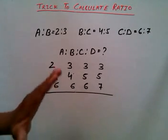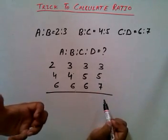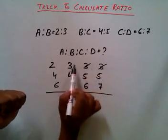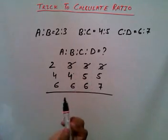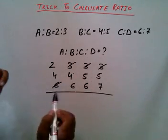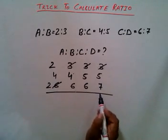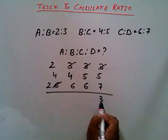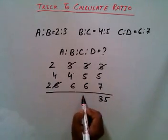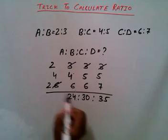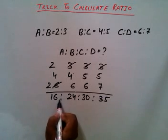Now we can directly multiply the terms in vertical line. Suppose here we have common 3 in all the vertical lines. We can directly cancel these terms because it makes our calculation easy. It will become 2. Now we can multiply: 5 into 7 is 35, 5 into 6 is 30, 4 into 6 is 24, and 4 into 4 is 16. This is the final ratio.